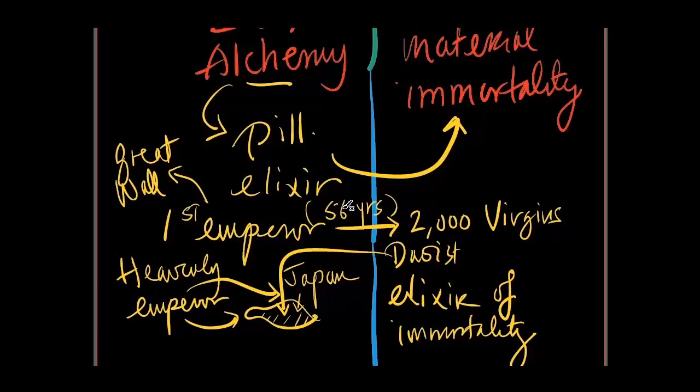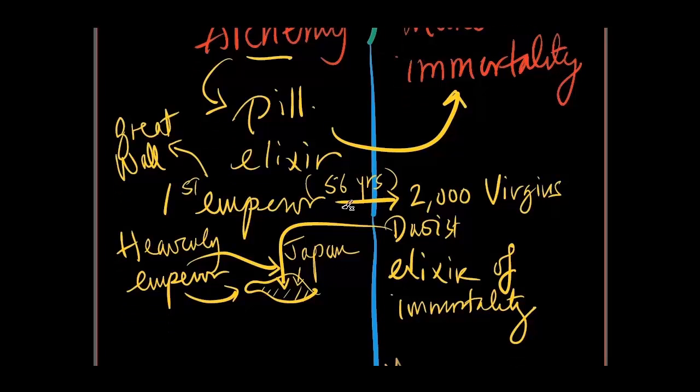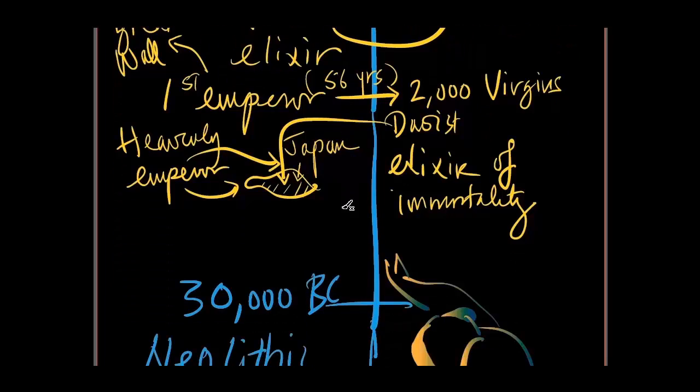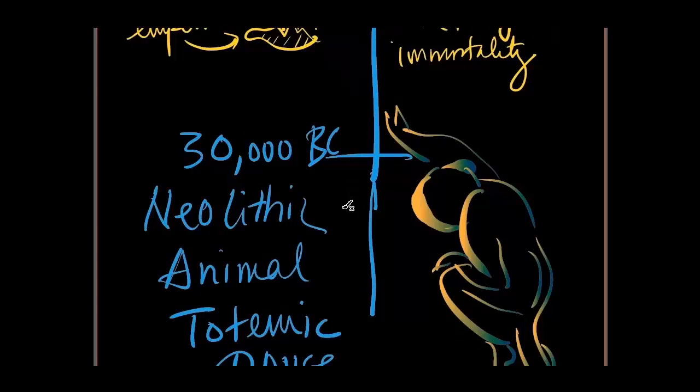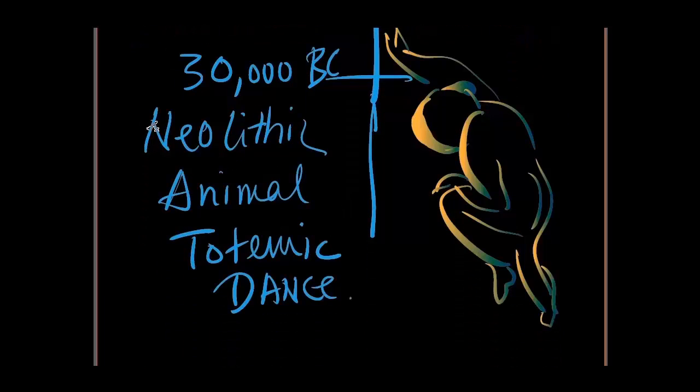Now if we trace further back and we say, where does the movement of Qi Gong come from? Then we have to go much, much further back to 30,000 years ago during the Neolithic time.